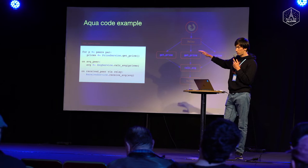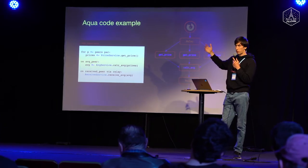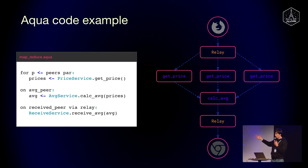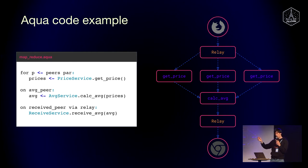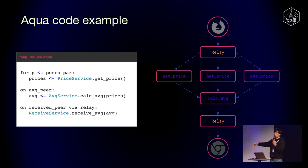Aqua allows you to implement any workflow. For example, to implement a MapReduce on the network: the red squares are nodes, and the functions inside are Marine functions. This Aqua code says: get a list of nodes that provide a getPrice function, call getPrice on several of them in parallel, calculate the average on another node, and send it to a second user. This application works without any centralized coordination server.